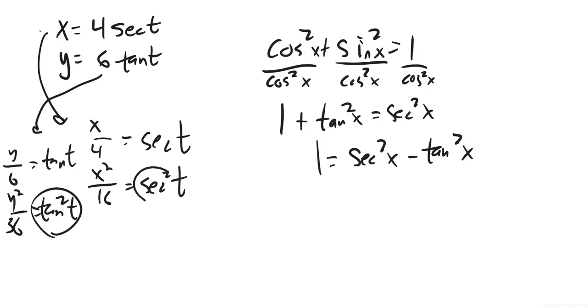So, tangent squared is y squared over 36. Secant squared is x squared over 16. I'm just going to substitute those in. Let's see. Secant x squared over 16 minus tangent y squared over 36. Ah, that equals 1. That's familiar. That's a hyperbola.